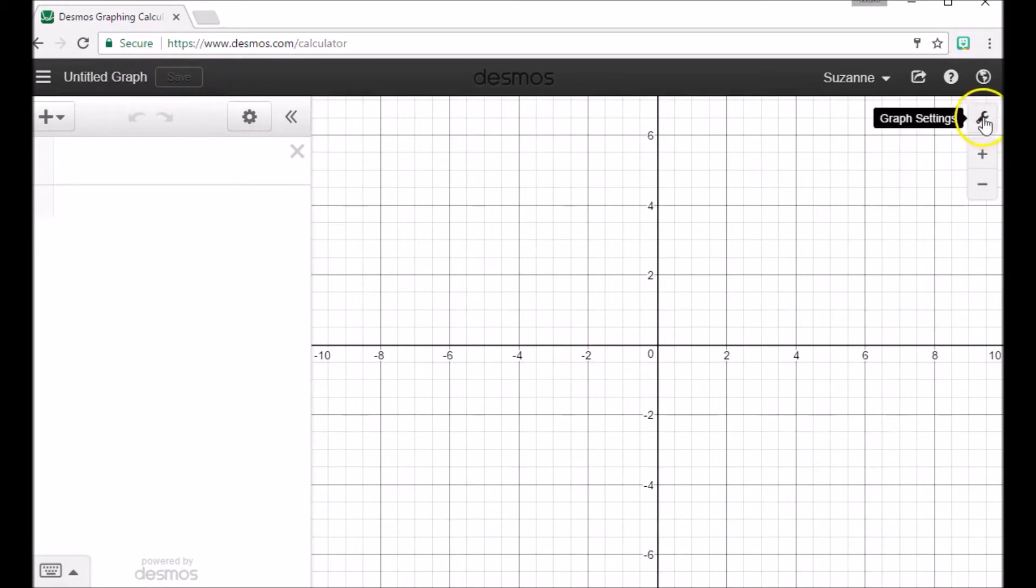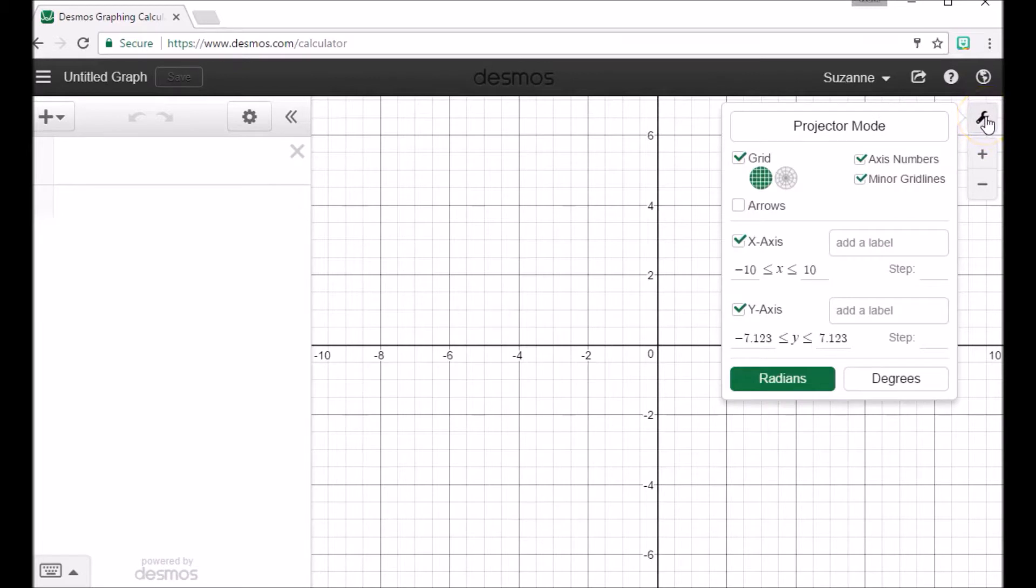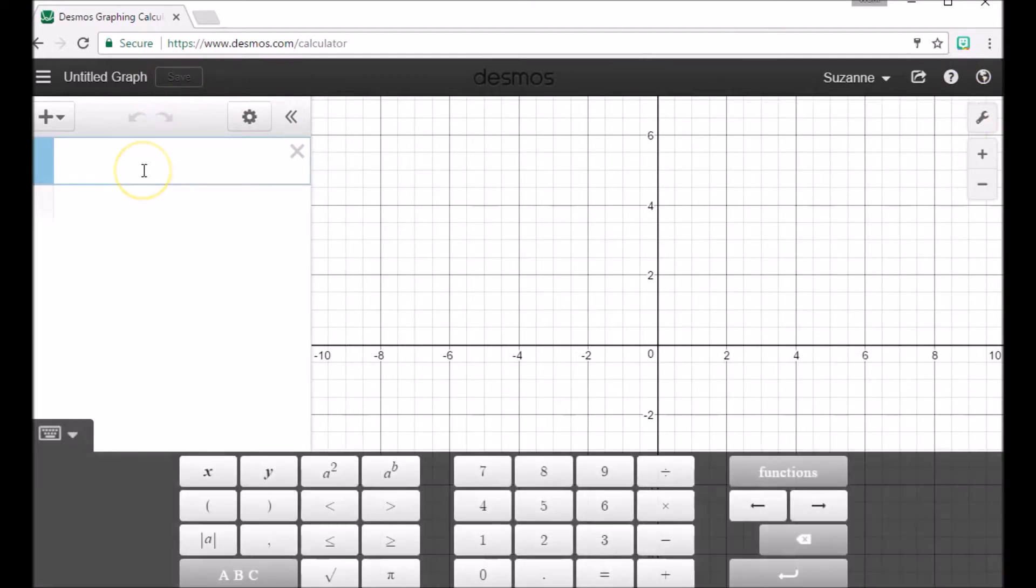So it has my name there. Let's start with a few things I think are really important. Over here is this wrench, and so let's spend a few moments talking about that. There's grids on here, axis numbers, x-axis, y-axis, radians, degrees.